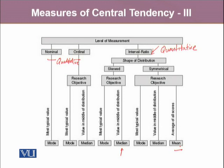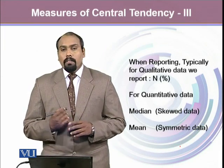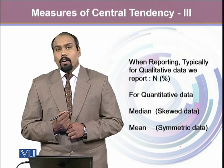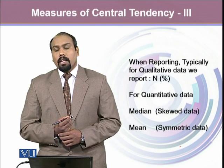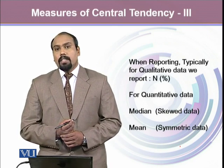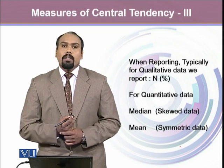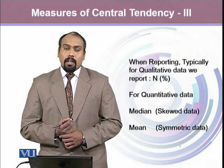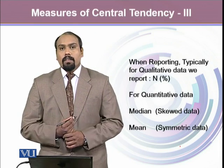It's easy to understand, which is why for quantitative variables that are symmetric, we always report and prefer arithmetic mean. When typically reporting our data for qualitative variables, we report number of observations along with percentages, and tend not to calculate other measures of central tendency. But for quantitative data, depending upon the shape: for skewed data, median is preferred, and for symmetric data, mean is preferred. Thank you.